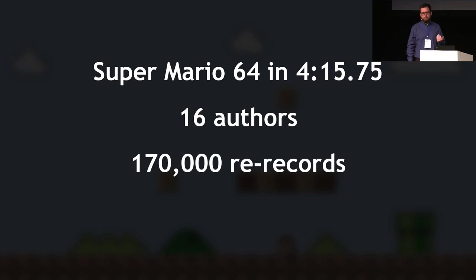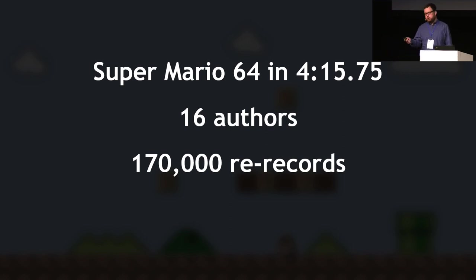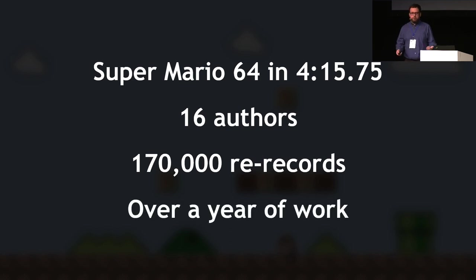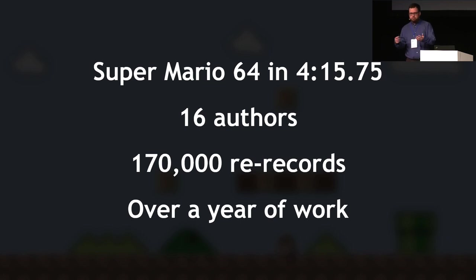Tool-assisted speedrunners decided to try and solve this problem. They managed to beat the game in four minutes and 15 seconds, but the project took 16 authors and 170,000 re-records — meaning every time you reload a previous save state to try something else, that's a re-record, and that's roughly how many they used. The project took over a year of work, including theorizing the strategy, researching, and doing everything needed to make the final product. It was gradually refined over subsequent years.